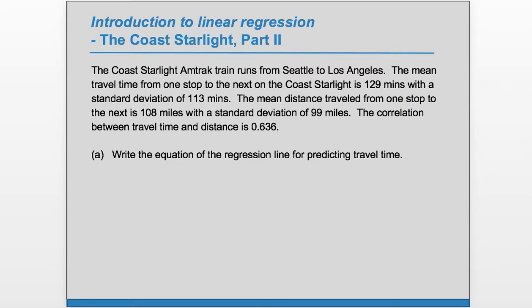Part A: Write the equation of the regression line for predicting travel time. So we want to predict travel time. The thing that you want to predict is always going to be your y. So we know that travel time is going to be y.